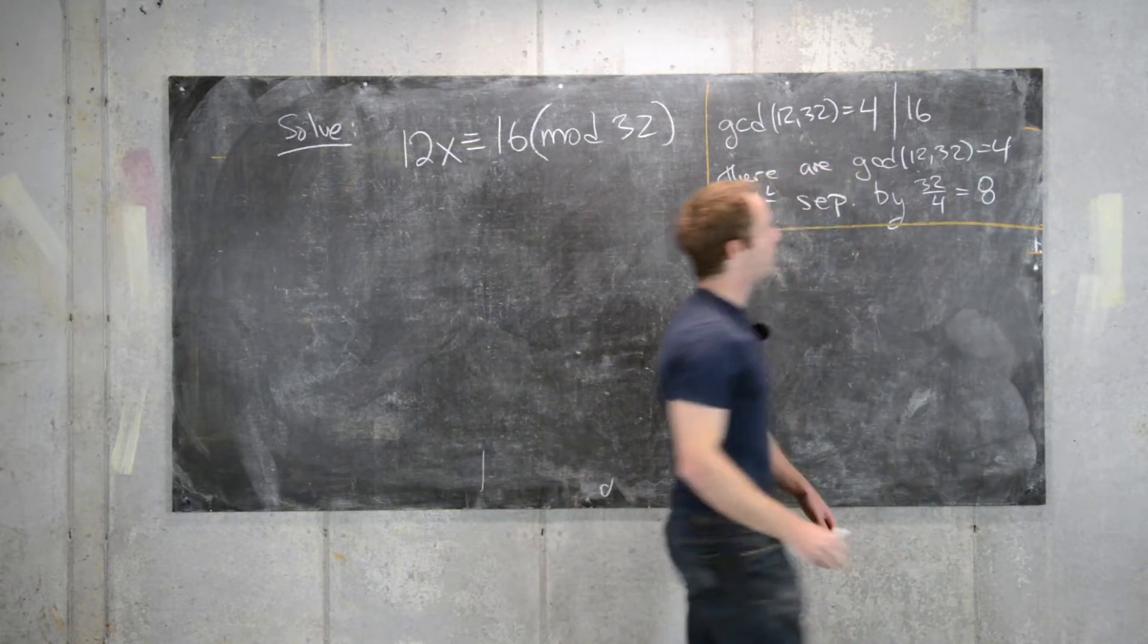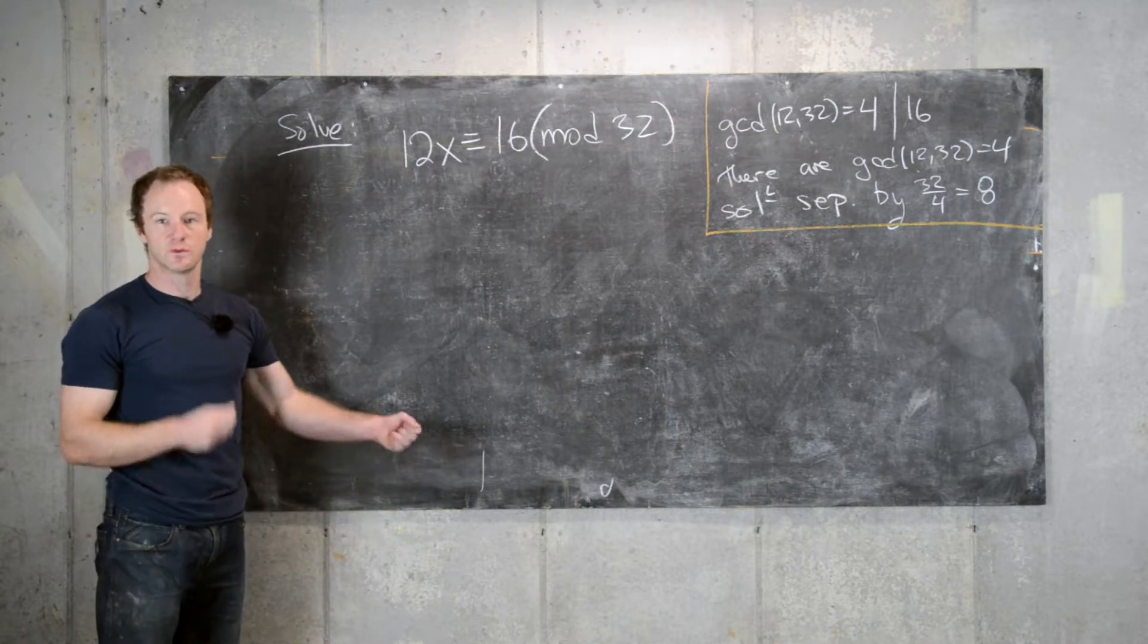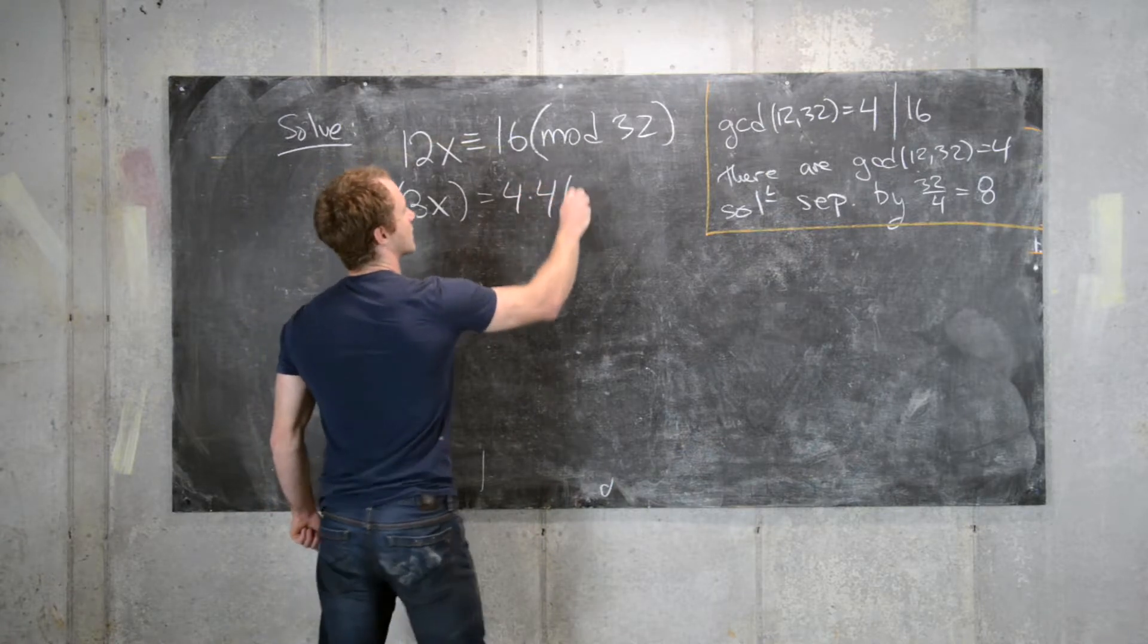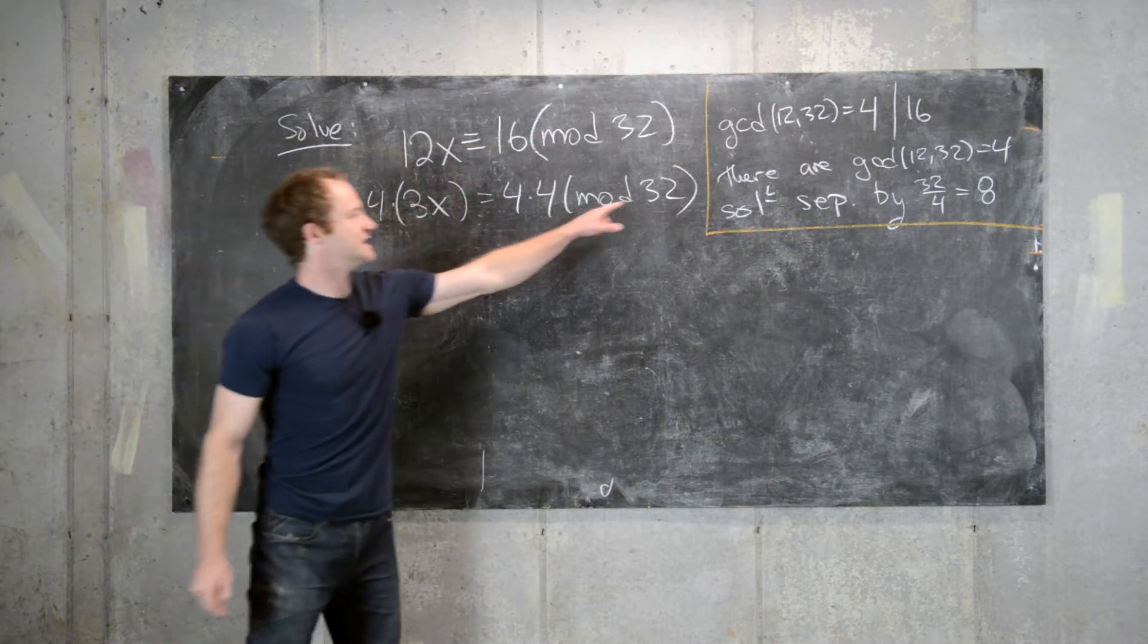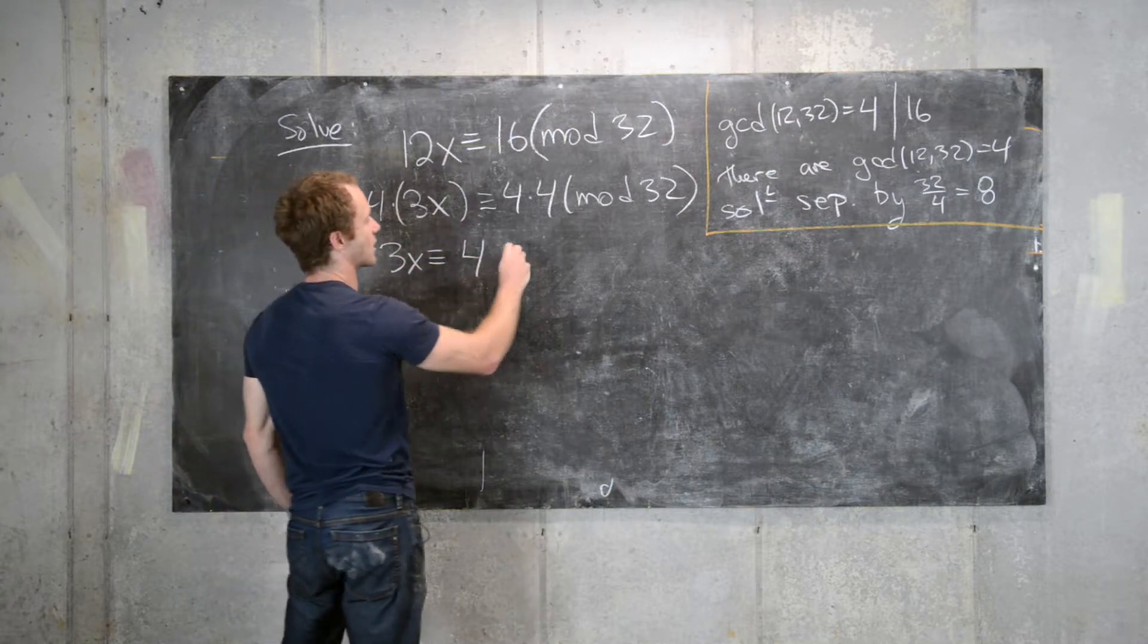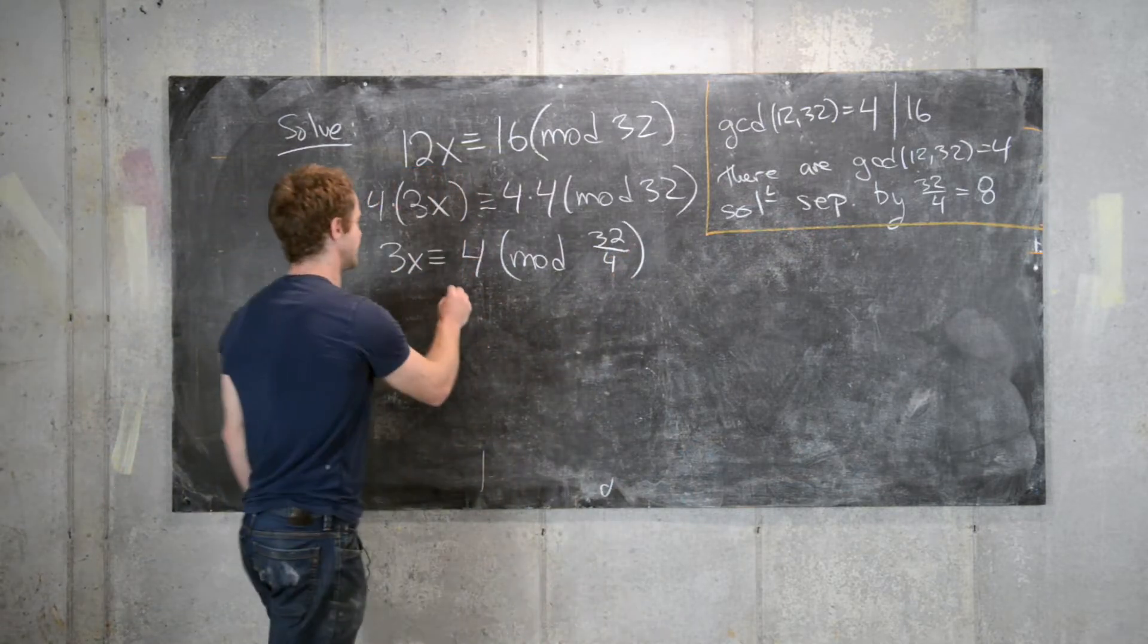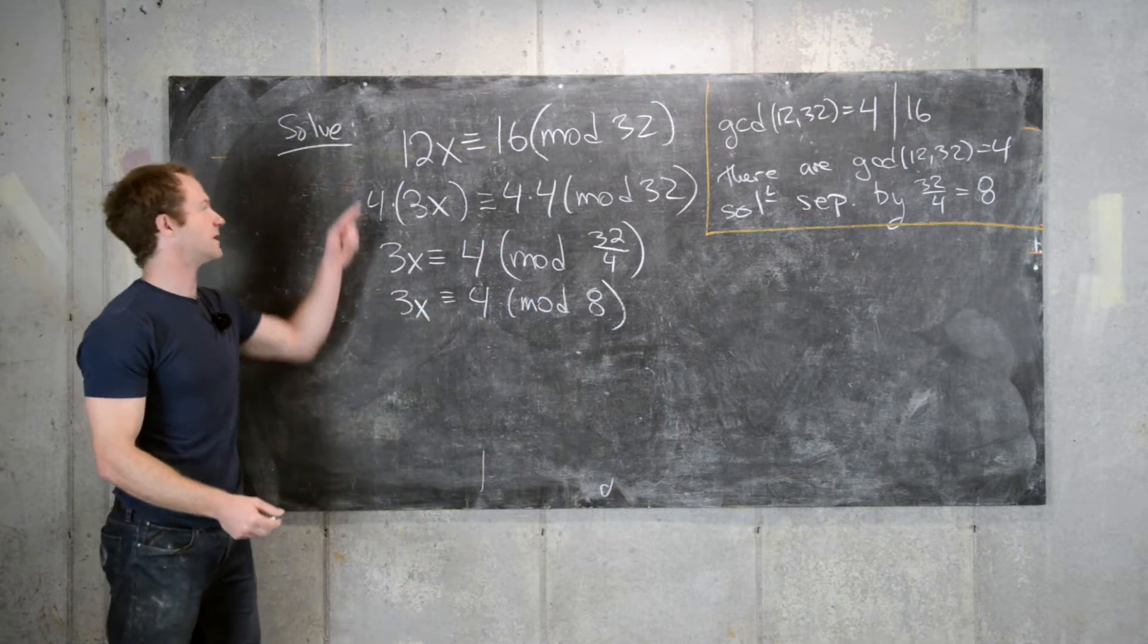So we boiled it down to the fact that there are 4 solutions each separated by 8. So now finding the first solution, we'll use some tricks that were on the previous board. So what we want to first do is maybe factor this out. We can write this as 4 times 3x equals 4 times 4 mod 32. And this is really good because this allows us to decrease the number that we're working modulo with respect to. So this means that 3x is congruent to 4 mod 32 divided by the GCD of 32 and 4, which is 4. So that is congruent to 4 mod 8. So we have 3x is congruent to 4 mod 8.